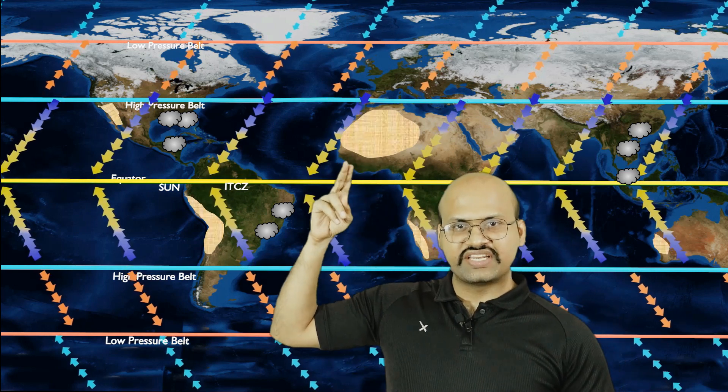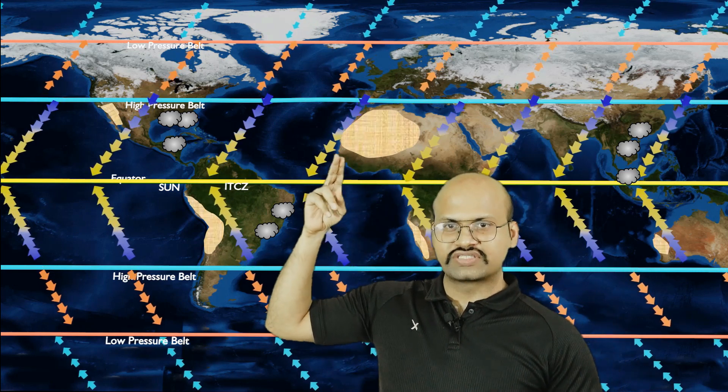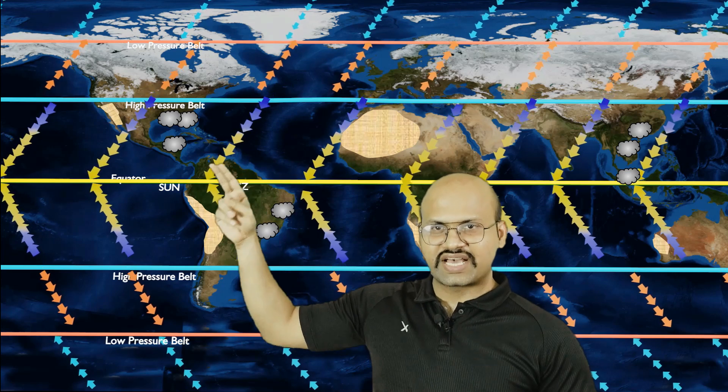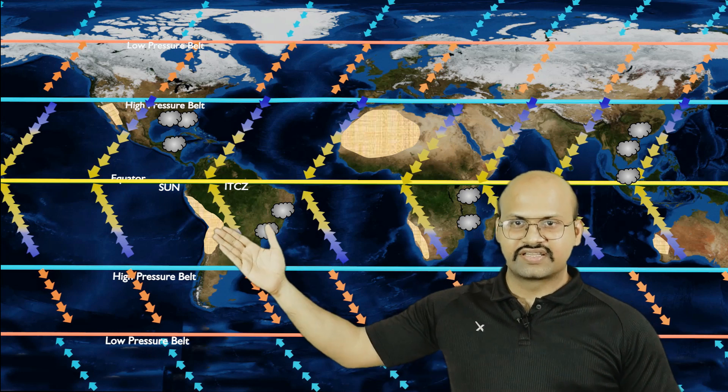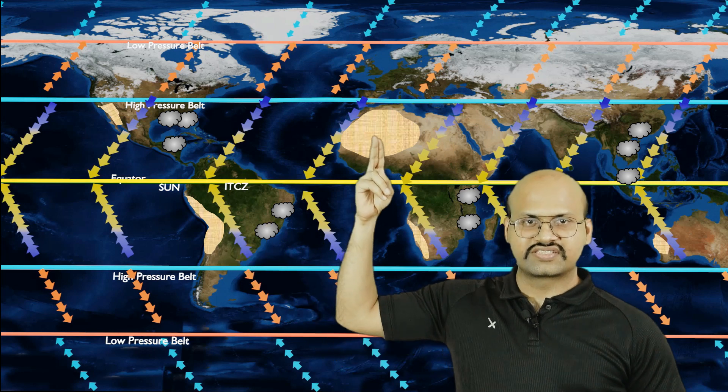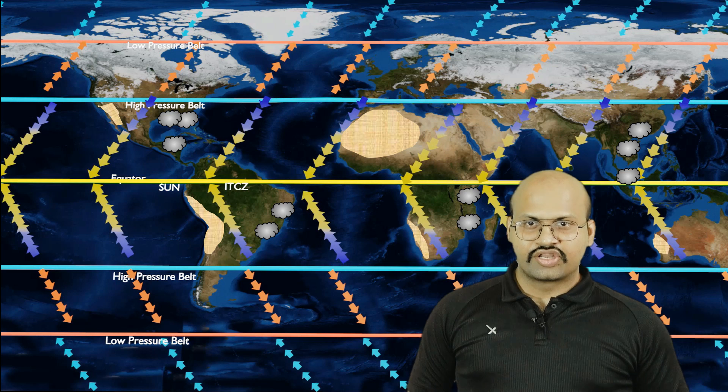If we go to the western margin of these continents, not much rain is brought over here because these winds flow from the eastern direction and travel over the continent, losing most of their moisture before reaching the western margins. Therefore, on most continents at the western margins we see deserts — here is a desert, here is the Sahara Desert, and in Australia there is a desert as well.